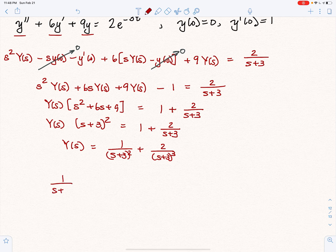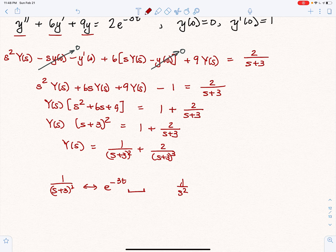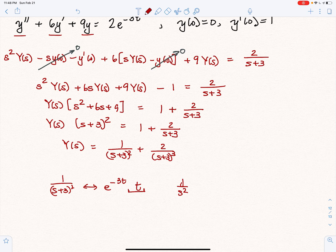Let's take this step by step. 1 over S plus 3 quantity squared. Remember, that's a shift, so this means this is going to apply to e to the negative 3T times some other function. What do we put there? We put there the function whose transform is 1 over S squared, which we know is T.